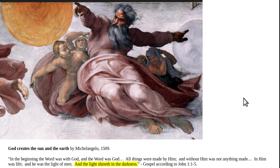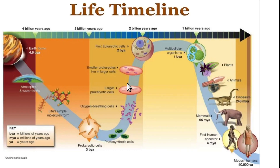Starting with the first picture — this is Michelangelo's God creating the sun and the earth. Life on earth was not initially present. It's thought that life started around three billion years ago, and it was initially anaerobic, meaning without oxygen.